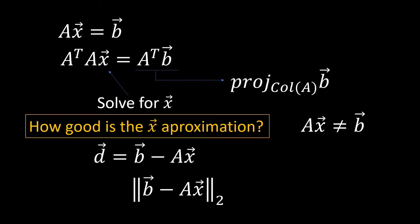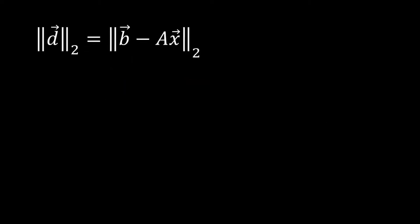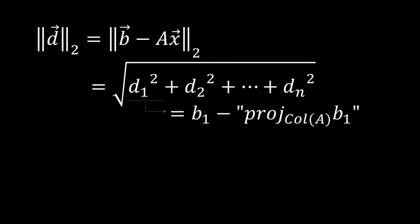But let's examine the norm of this difference vector here. Because what we're doing by solving for the projection of our B vector is we're actually finding the difference in each one of the different components between our B vector and the projection of the B vector on our column space.